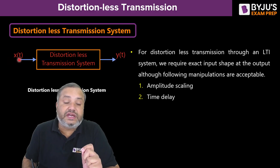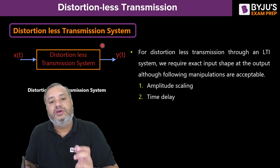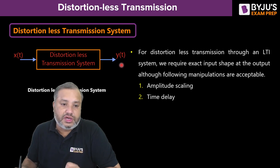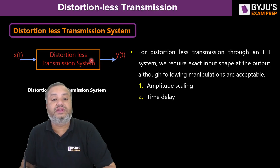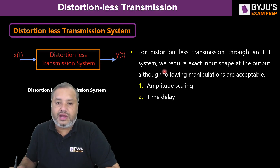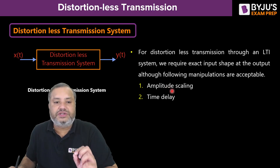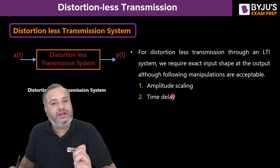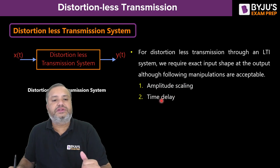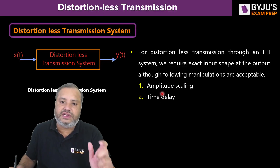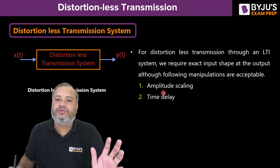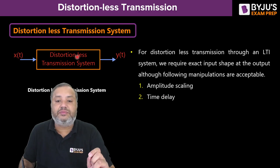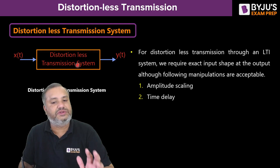It means once a signal is processed through the system, its originality should not be lost. When a signal x(t) is passed through a distortionless transmission system, we allow two types of operations: amplitude scaling and time delay. If only these two operations are applied on the input signal, then that system is referred to as a distortionless transmission system.